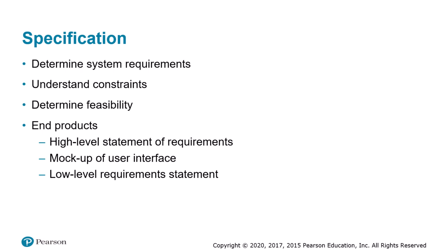Step one, specification, focuses on determining the requirements of the system and the constraints under which it must operate. Software engineers communicate with intended users to determine their needs and decide if the software system is feasible given budget and schedule requirements. If the software will replace an existing process, engineers study that process to understand the required functions. They may develop prototypes of the user interface to confirm the system will meet users' needs, resulting in a high-level statement of requirements and a mock-up, plus a low-level requirement statement providing details for those who will implement the software.